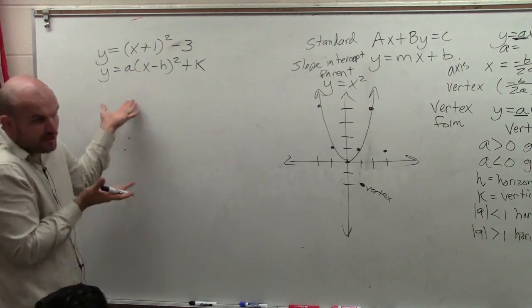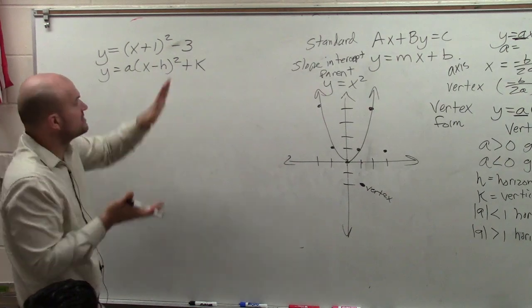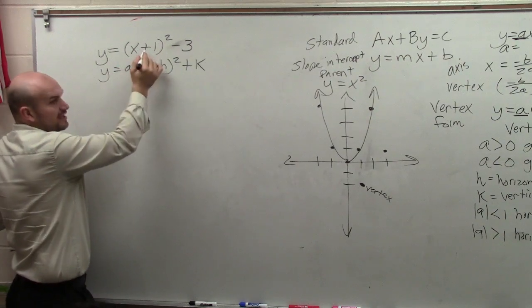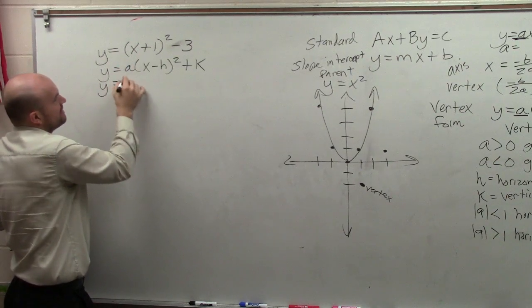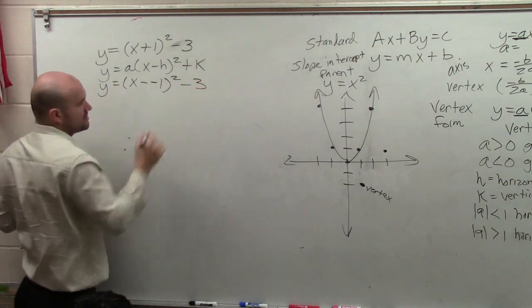So here's our vertex form. And you can see this is in vertex form. It's very important for us to be able to understand what is our h and our k. And to represent this in true vertex form, I can rewrite this as x minus a negative 1 squared minus 3.